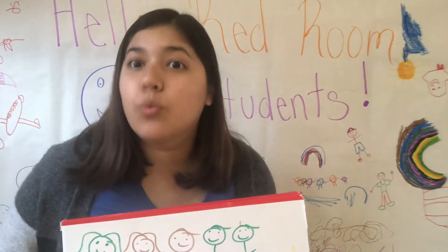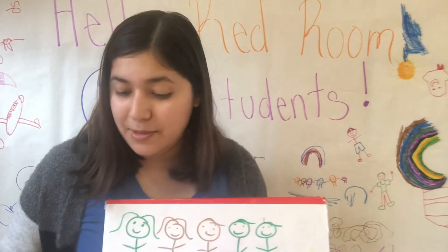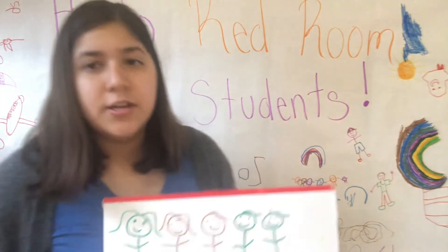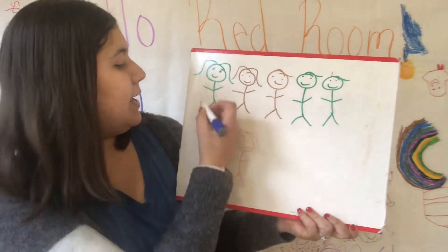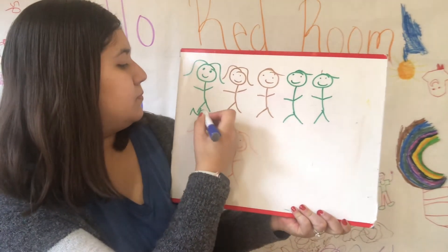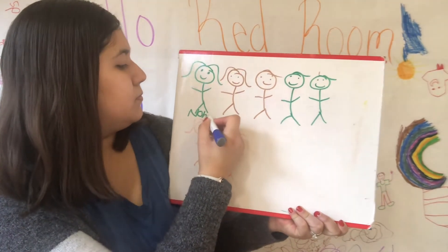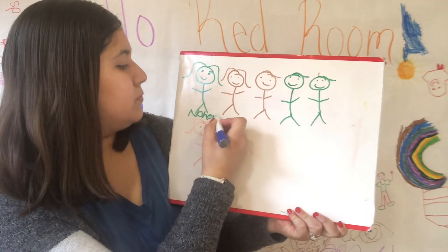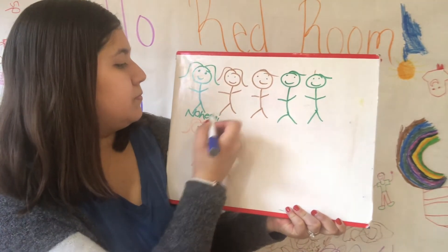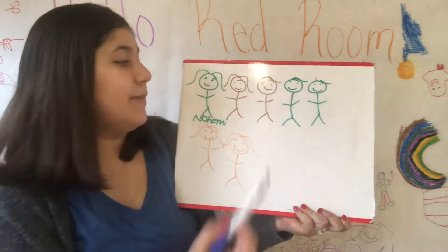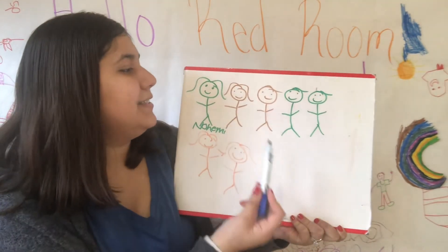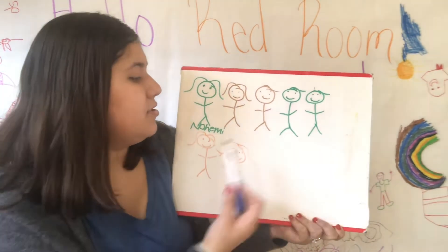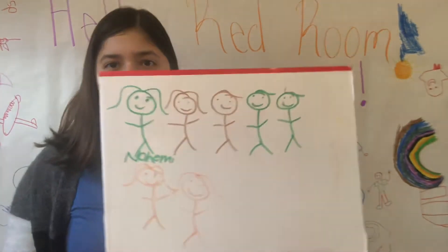After you finish drawing your family, I want you to write the names of your family members. So here I would write my name, and I would write my mom's name and my dad's name, my brother's name, and my sister's name.